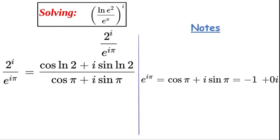So therefore we have 2 to the power of i over e to the power of i π is equal to cos of ln 2 plus i sine ln 2, over cos of π plus i sine of π.